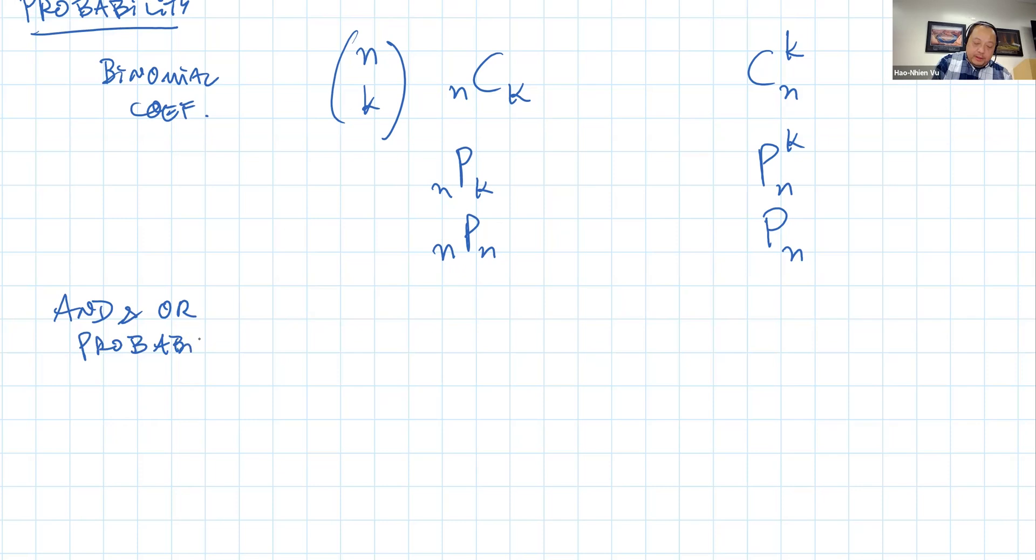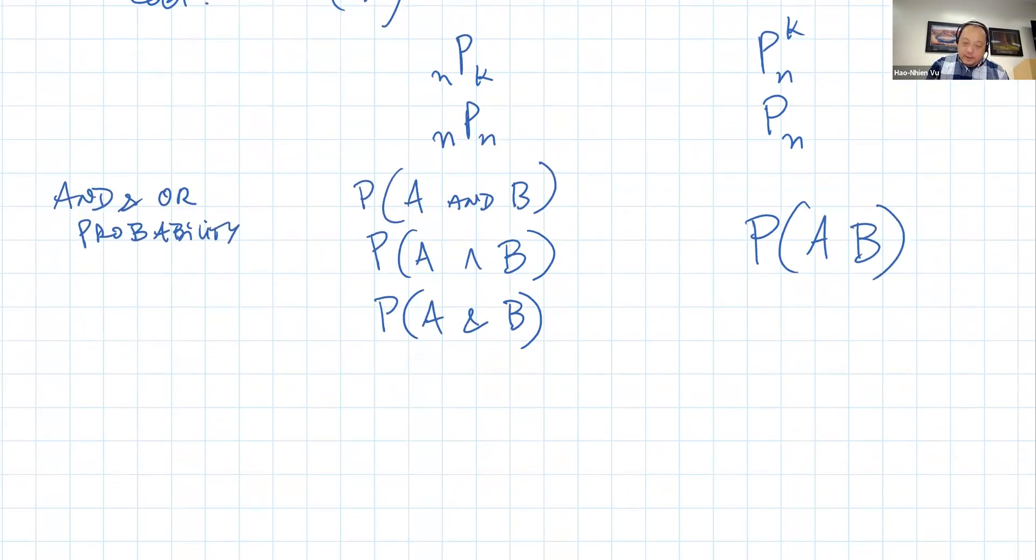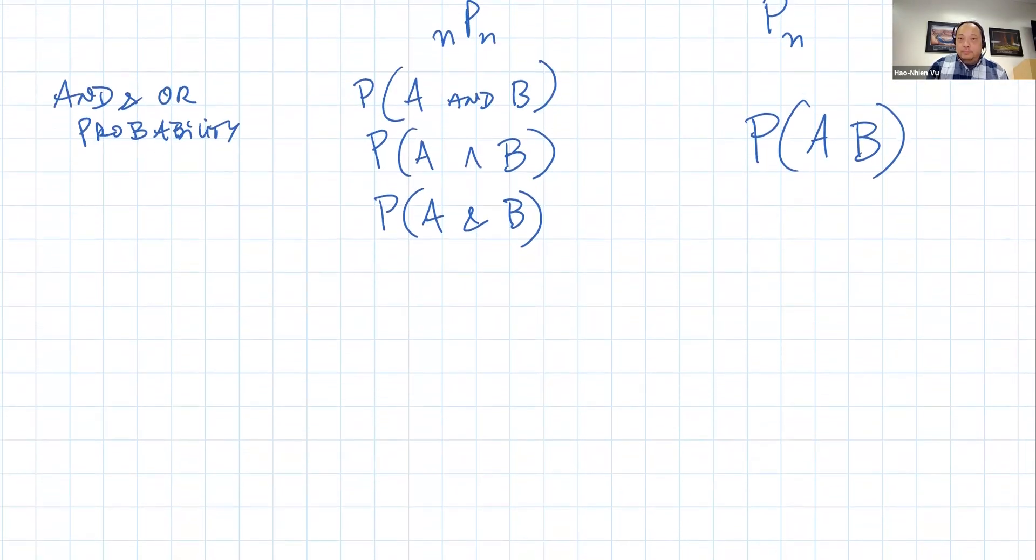And in probability. In the US, let's say we use P(A and B). Sometimes we spell it out. Sometimes we use the logical symbol. Sometimes we use the intersection symbol. In Vietnam, it's just P(A·B). It does remind them helpfully, I hope, that it leads to a multiplication of some sort.